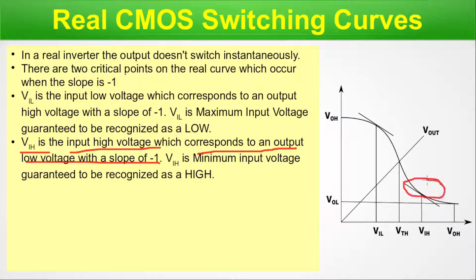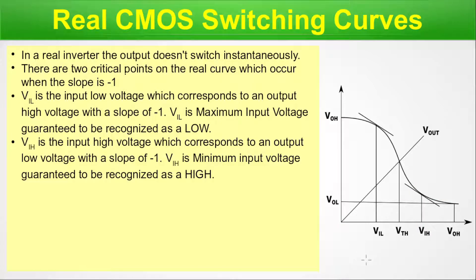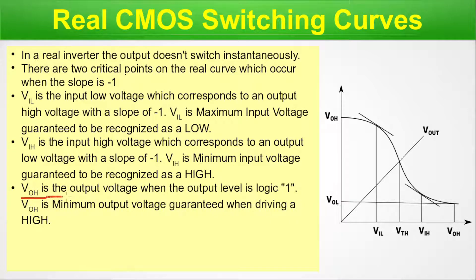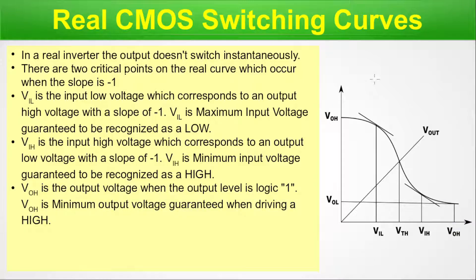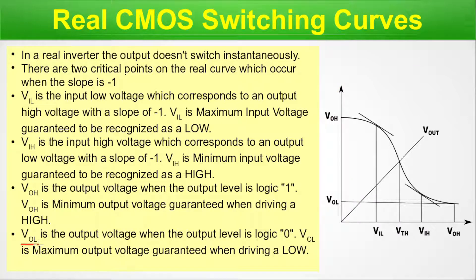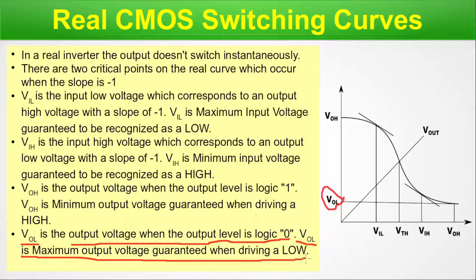These are terms related to the CMOS circuit — please remember them. VOH is the output voltage when the output logic level is one; VOH is the minimum output voltage guaranteed when driving a high. VOL is the output voltage when the output logic level is zero; VOL is the maximum output voltage guaranteed when driving a low. These are the different parts of the switching curve.